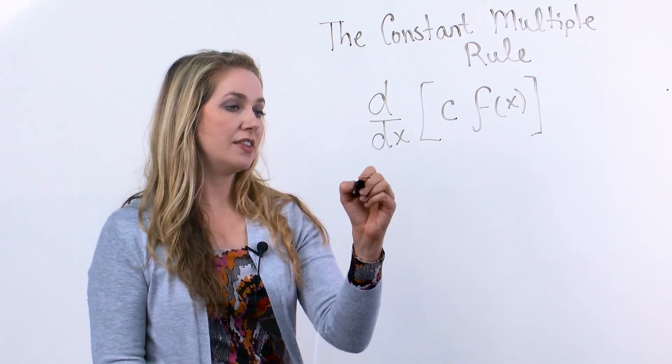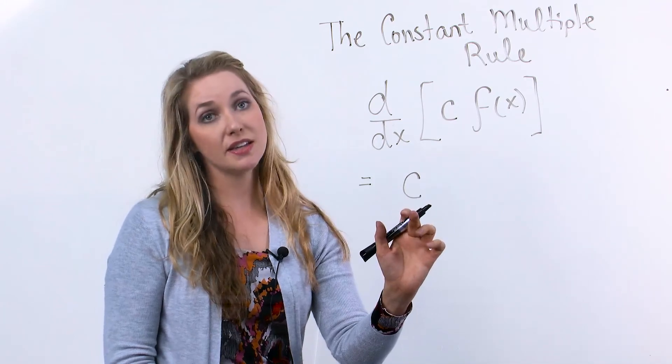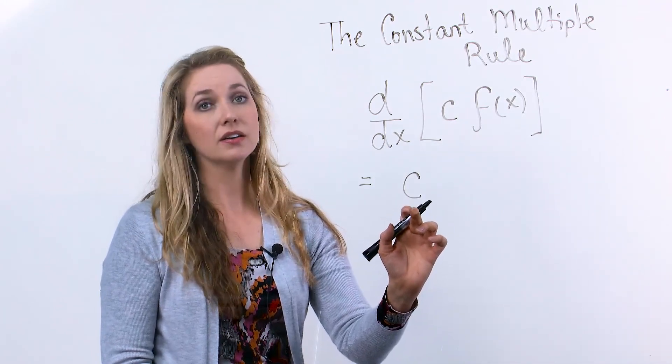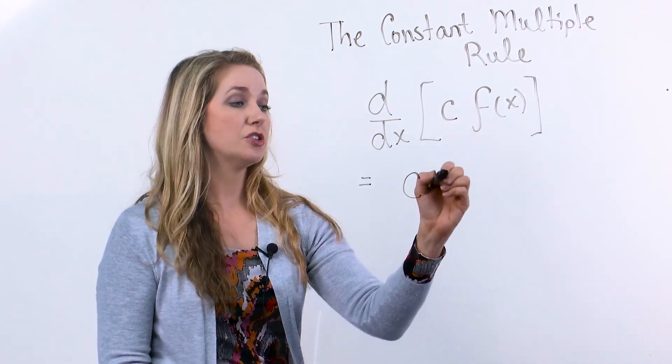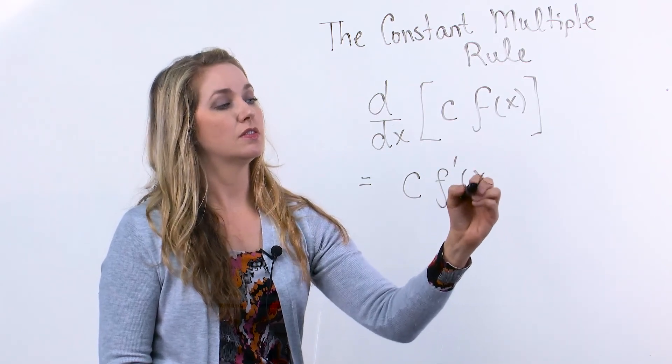So the way we're going to find this derivative is the constant stays a constant multiplier and we just find the derivative of the function.